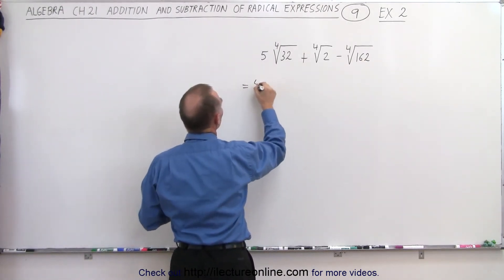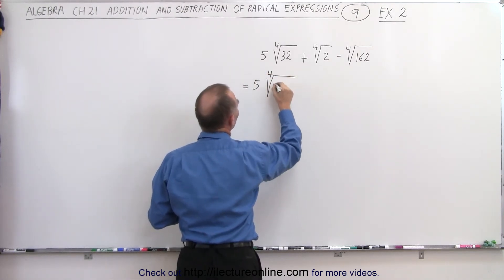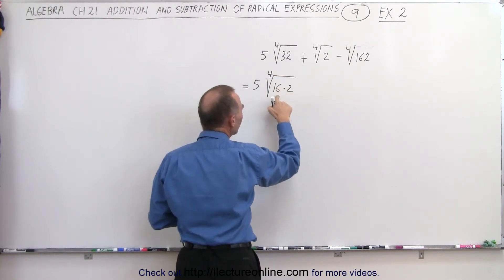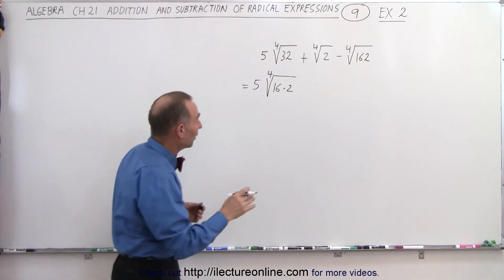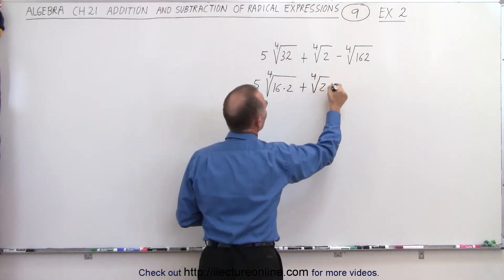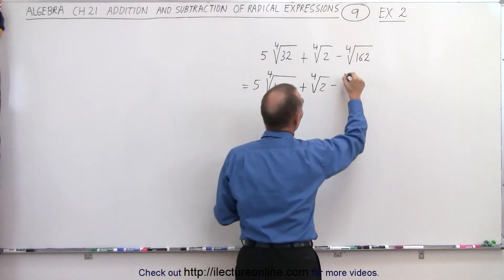So this can then be written as 5 times the fourth root of 16 times 2, because that gives you 32. But notice we know how to take the fourth root of 16. That's equal to 2. So then plus the fourth root of 2 minus.